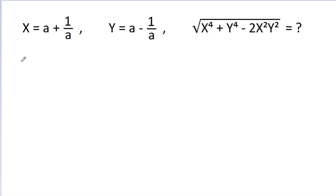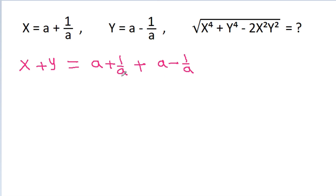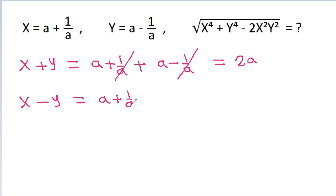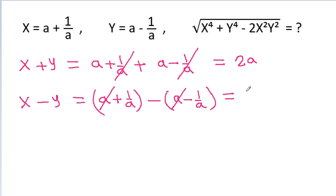If we add x and y, then it is a minus 1 by a plus a minus 1 by a, and 1 by a will get cancelled, and we get 2a. And if we subtract x and y, then it is a minus 1 by a minus a minus 1 by a, and a will get cancelled, and it is 1 by a plus 1 by a, that will be 2 by a.